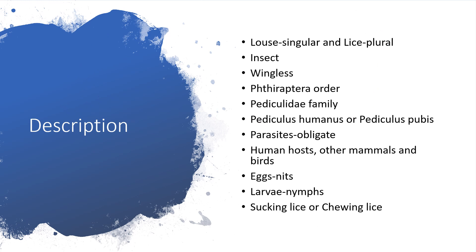The description is essentially that if you're talking about a single one, that is louse, but in the course of this presentation I'll be using the plural form: lice. They are insects and they are wingless, so they can't fly and they can't jump. They belong to the order Phthiraptera and the family Pediculidae. That is why we have Pediculus humanus affecting the body called corporis, or the head called capitis. You also have another one called Pediculus pubis affecting the pubic region. They are parasites — obligate parasites — meaning they cannot live or survive without hosts. Their hosts are mainly humans and other mammals, and they can be found in birds. The eggs are called nits, the larvae are called nymphs, and you will either be dealing with sucking lice or chewing lice.